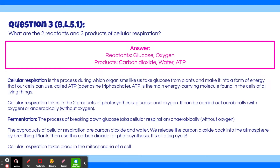Cellular respiration is the process during which organisms like us take glucose from plants and make it into a form of energy that our cells can use, called ATP. ATP is the main energy-carrying molecule found in the cells of all living things. Cellular respiration takes in the two products of photosynthesis — glucose and oxygen. It can be carried out aerobically, with oxygen, or anaerobically, without oxygen. An example of when we would use fermentation is when we are exercising and our body is struggling to get enough oxygen to all our muscles. Fermentation would produce ATP for our muscles without oxygen; however, it can cause pain in our muscles and doesn't produce nearly as much ATP as normal aerobic cellular respiration.